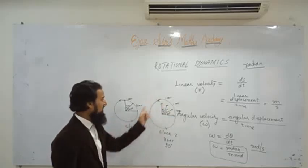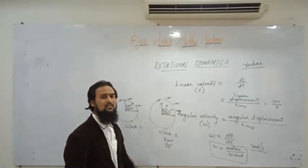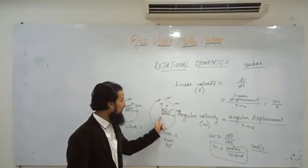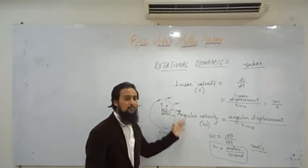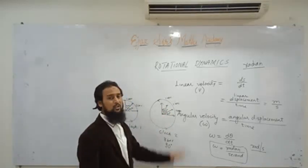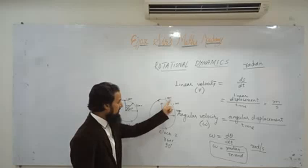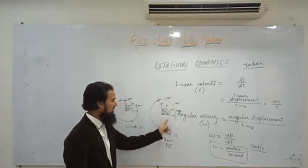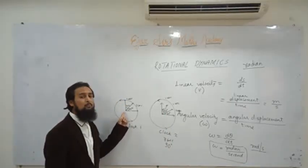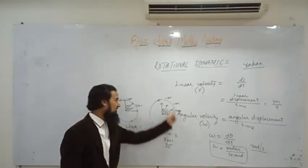For a clock covering 30 degrees per second uniformly, its angular velocity is constant = 30°/s = π/6 rad/s. For clock 2 at 45°/s = π/4 rad/s, it has greater angular velocity. Both have constant (uniform) angular velocity. If in equal time intervals equal angles are covered, the angular velocity is constant.